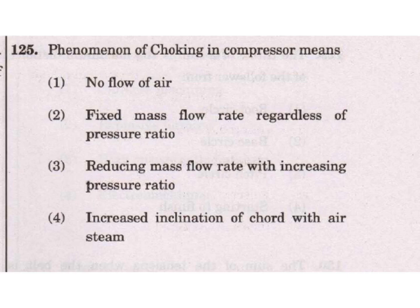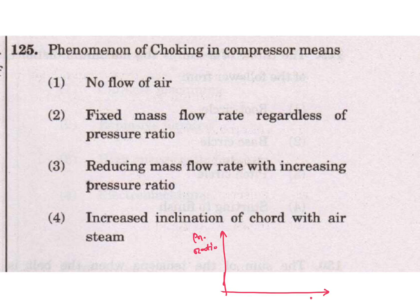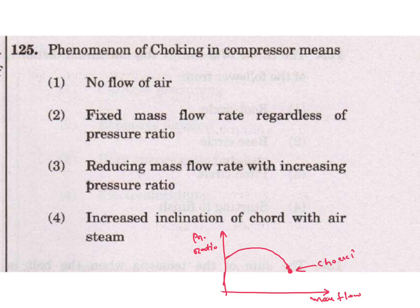Phenomenon of choking in a compressor: on a pressure ratio versus mass flow chart, at the point of choking, mass flow is maximum. With increasing pressure ratio, there is a fixed mass flow rate regardless of pressure ratio. Option 2 is the answer.